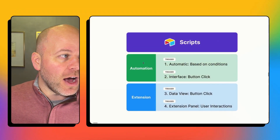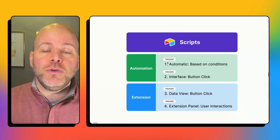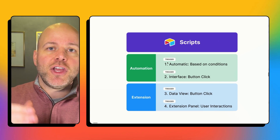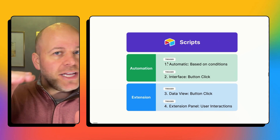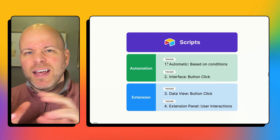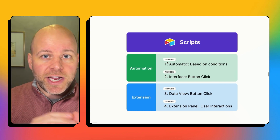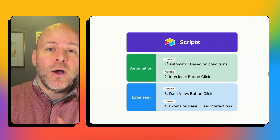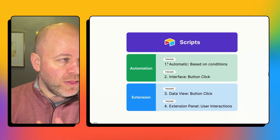If you've watched any of our other videos, you may know that there are four primary ways that you can trigger a script to run inside of Airtable. The first two are on the automations panel, and the second two are through Airtable extensions. We have a video that breaks down each one of these four ways, the different considerations, and things to think through when you're deciding which method to go with.